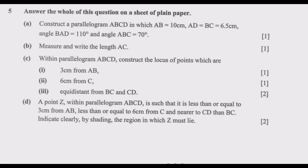Question 5 says: answer all of this question on a sheet of plain paper. Question A: construct a parallelogram ABCD in which AB equals 10 cm, AD equals BC equals 6.5 cm, angle BAD equals 110 degrees, and angle ABC equals 70 degrees.